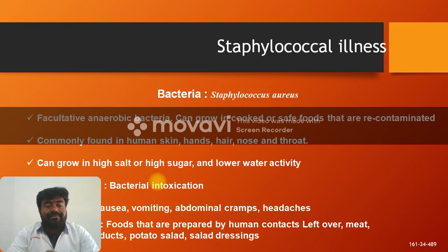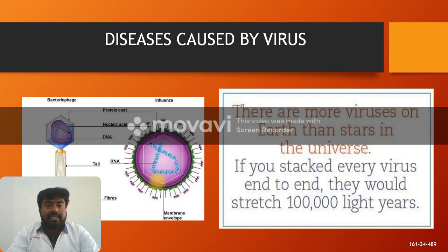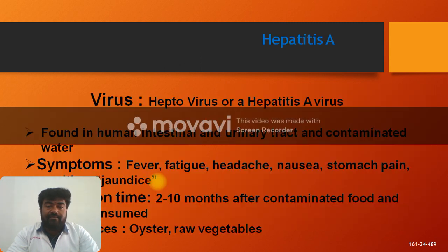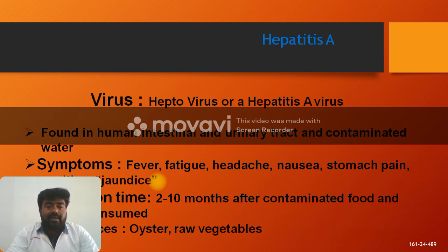Staphylococcal illness is also a foodborne disease. Viral infections include those caused by Hepatitis A virus, also known as Hepatovirus, generally found in the human intestinal tract. Symptoms include fever, headache, stomach pain, and sometimes jaundice. The incubation time is two to ten weeks after consuming contaminated food.